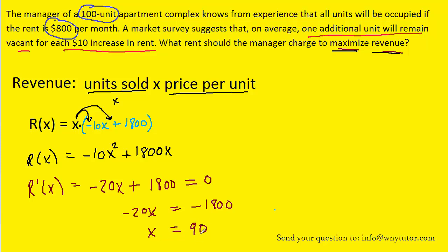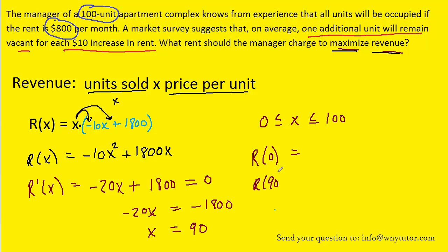To verify that x = 90 actually maximizes the revenue, we keep in mind that x can vary from 0 all the way up to 100 — it's possible that 0 units or all 100 units could be sold. Since we have a closed interval, we will use the closed interval method to confirm that x = 90 maximizes revenue. We find the revenue when units sold is 0, 90, and 100.